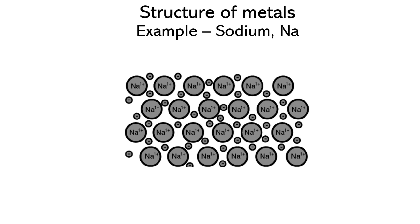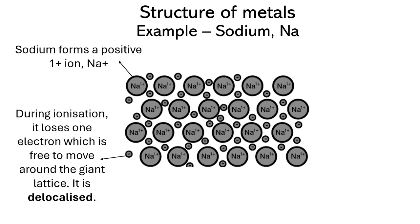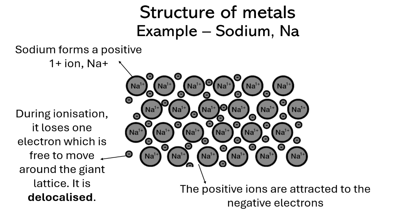So, how is a metal structured? We'll use sodium as an example. Sodium forms Na+ ions and the ions are attracted to the electrons they release. The electrons are free to move, or delocalized, as there are no non-metal atoms to take them. Pure metals, like sodium, are arranged in repeating layers.